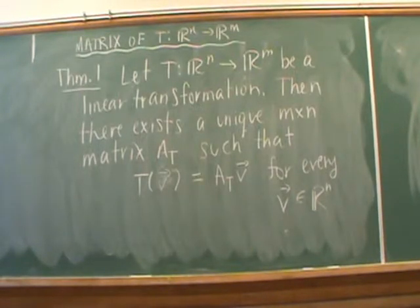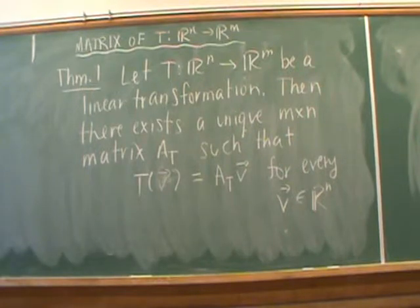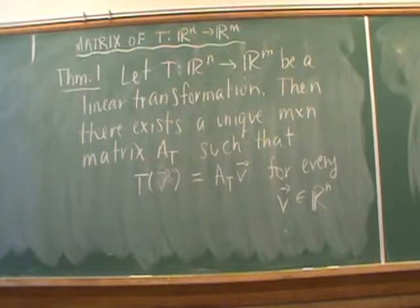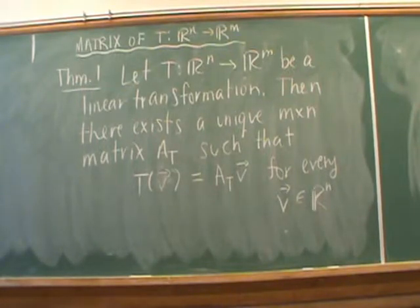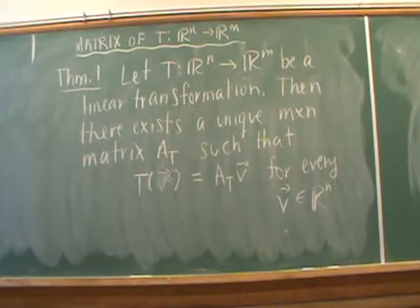We're going to start off with a couple of theorems. Theorem 1 says if we have a linear transformation from Rn to Rm, then there exists a unique matrix — we're going to call that matrix A sub T — such that T acting on a vector V is equal to the matrix multiplication A_T times V.